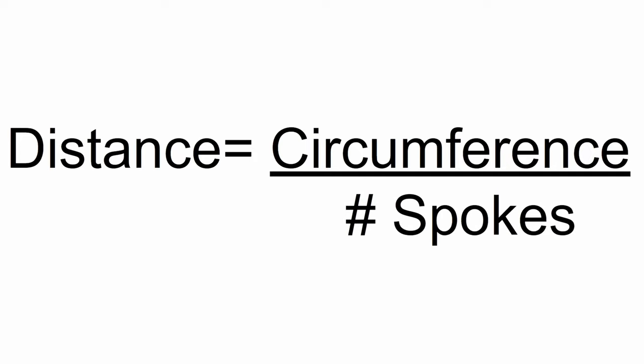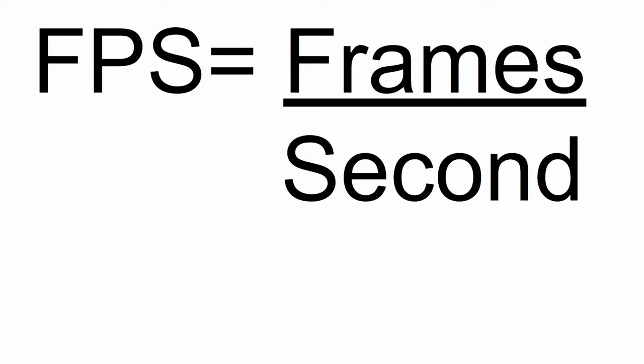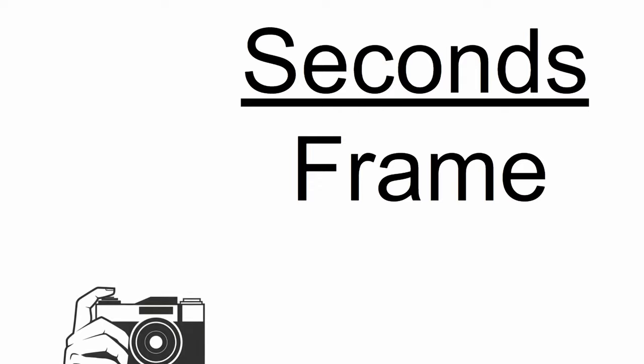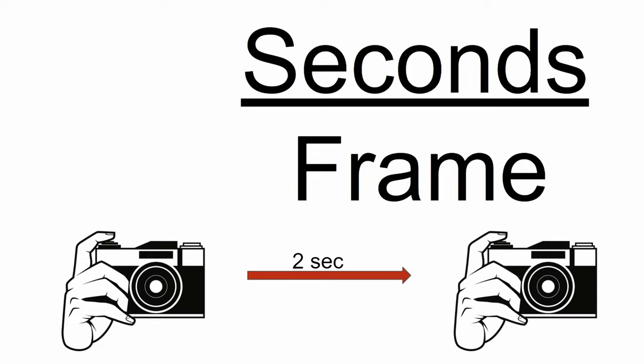Now on to the time. We know that the camera shoots at a certain frames per second, but if we flip this, or take the inverse, this should give us seconds per frame, or the time it takes until the next image is taken. For example, if we had two seconds per frame, then two seconds would pass until the next image is taken.